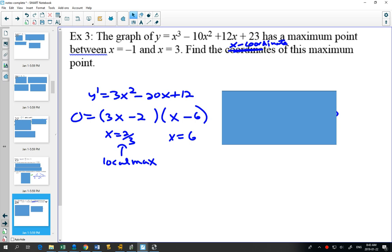What else do you know about this graph? It's a positive x cubed graph. So from last year, from grade 12, you already know the shape looks like this. And so we can tell from that shape that the 2 thirds has to be the maximum, the 6 has to be the minimum. The fact that 2 thirds is between negative 1 and 3 in the question tells us it's a maximum between those also tells us that 2 thirds has to be the maximum.